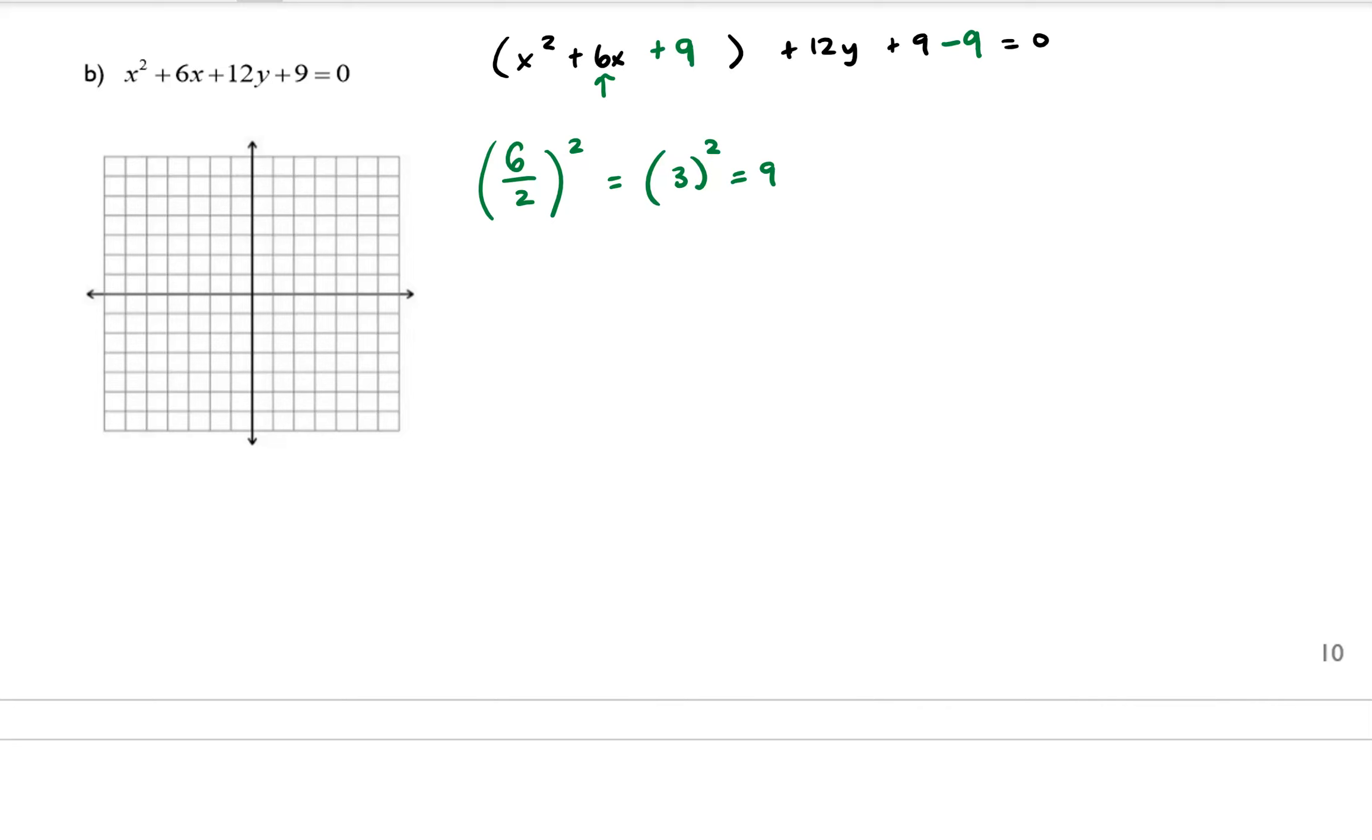So that balances out. And eventually, if I wanted, I could really think about this as plus 9 and minus 9. If I combine those, that results in 0. And that returns the original equation that I had. But by doing it this way, that allows us to rewrite x² + 6x + 9. We can factor that into (x + 3)². And then we have plus 12y.